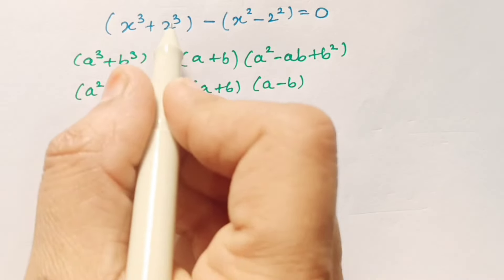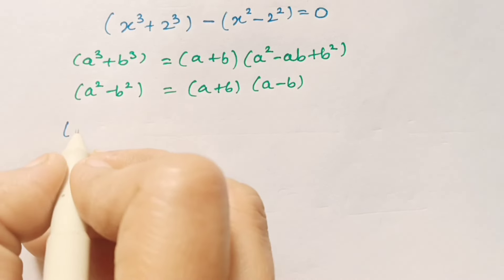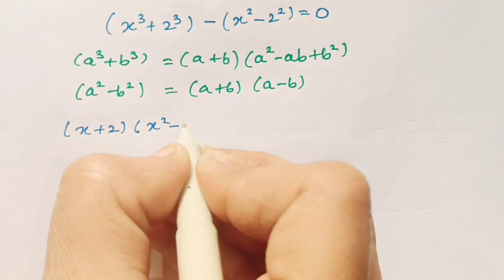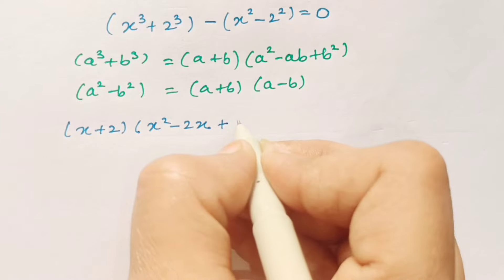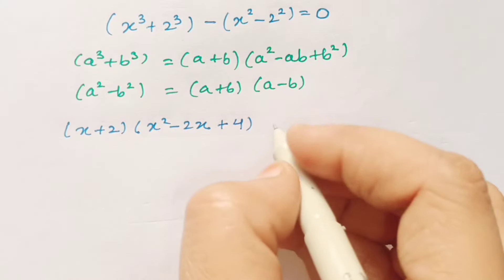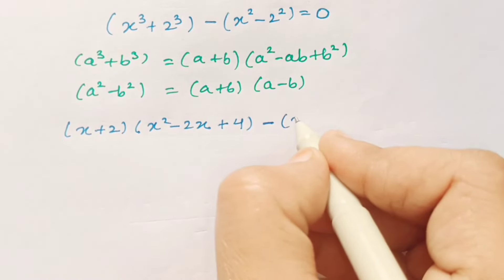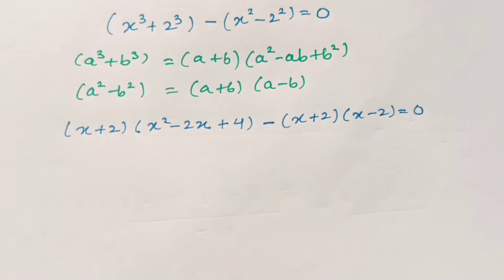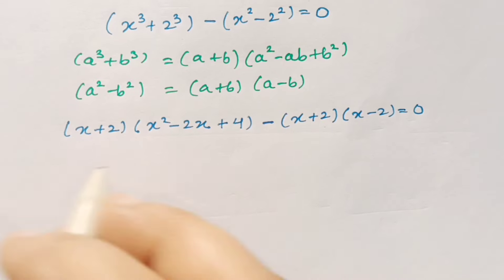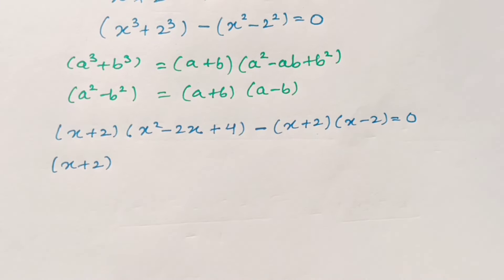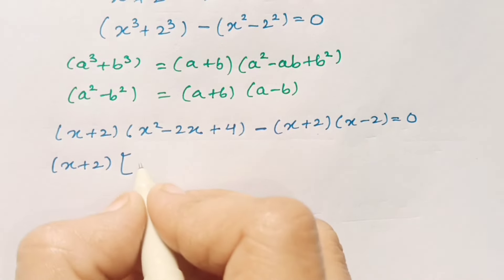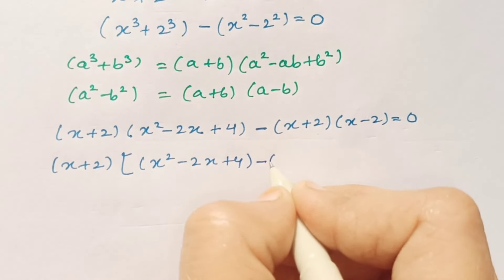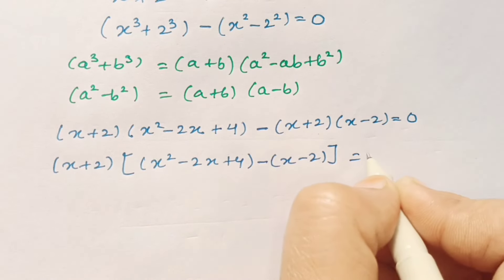Therefore our equation will become (x + 2)(x squared minus 2x plus 4), and with the negative sign as it is, minus (x + 2)(x minus 2) is equal to 0.